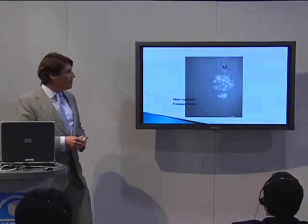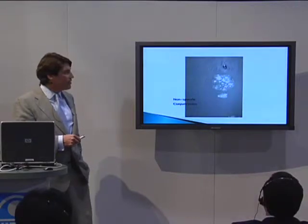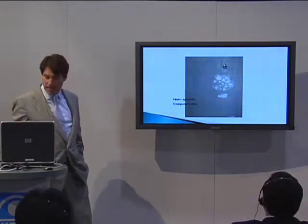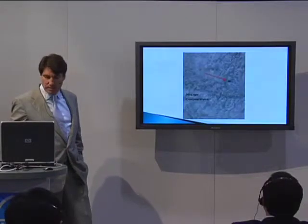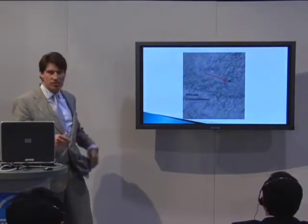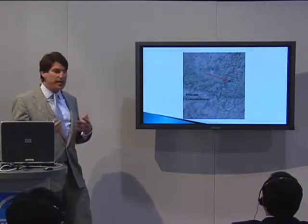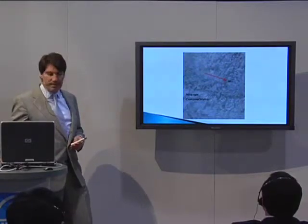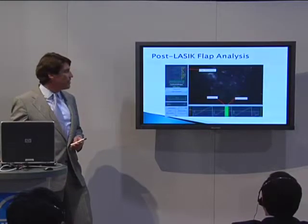We can look at conjunctivitis, and a lot of times we'll pick up a giant cell. We can look at the different cell types. Here's an eosinophil in allergic conjunctivitis. So it's just a non-contact way to look at the tear film itself.